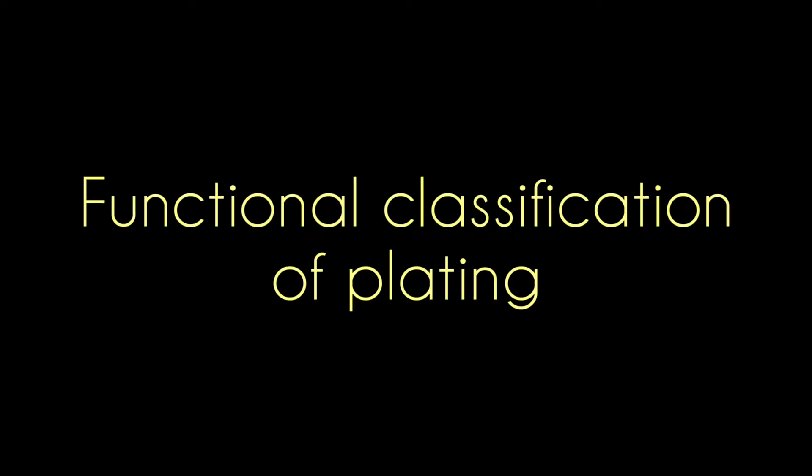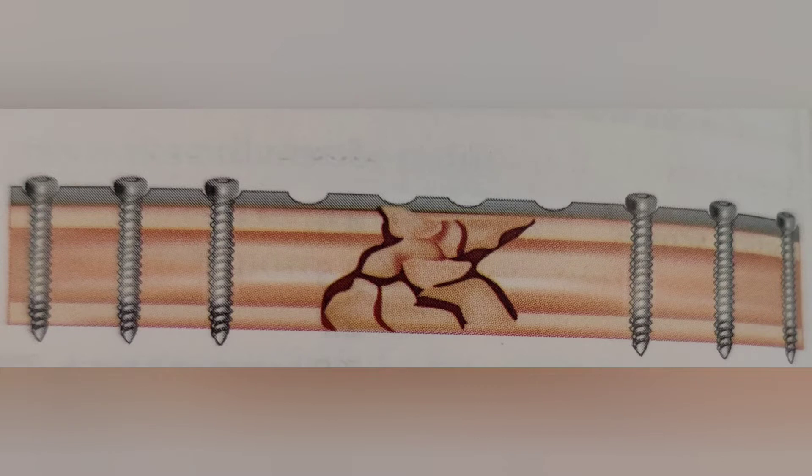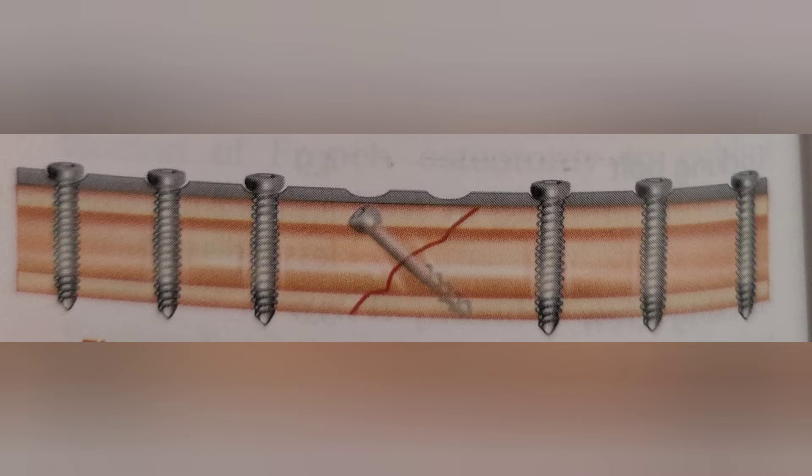Functional classification of plating. Bridging mode of fixation is a type of fixation used for comminuted fracture. Next is neutralization mode of fixation. It is mainly used for oblique fracture where we already inserted an interfragmentary screw over which we are inserting a plate, that is neutralization mode.